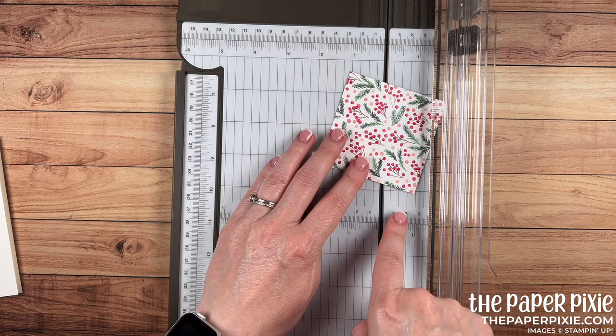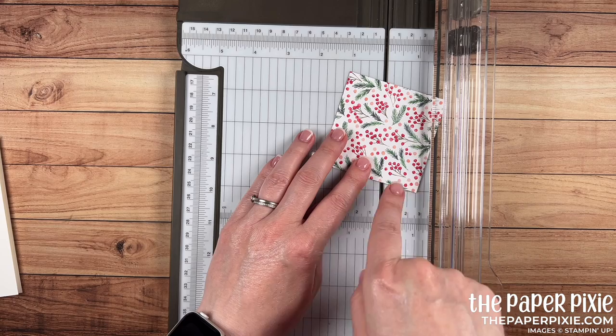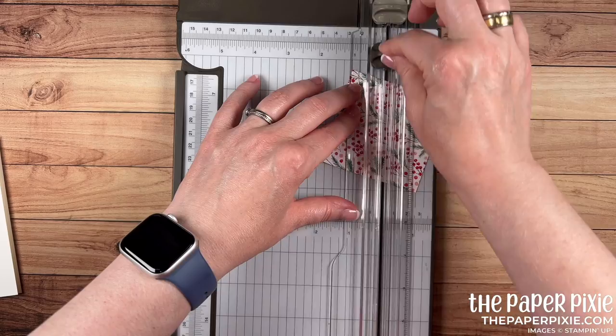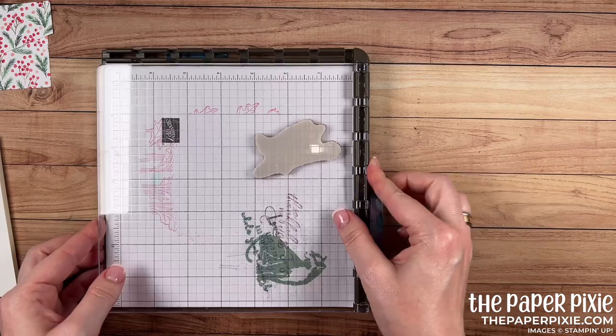So I'm going to line up this bottom corner here at the 1 inch mark which happens to be the fourth line to the right. And I like to press my finger there and then I can pivot this and we're going to line up this top corner at the 1 inch mark to the left of the cutting groove. Then I can just close the cutting guide and cut and you've got this perfectly angled piece of paper.